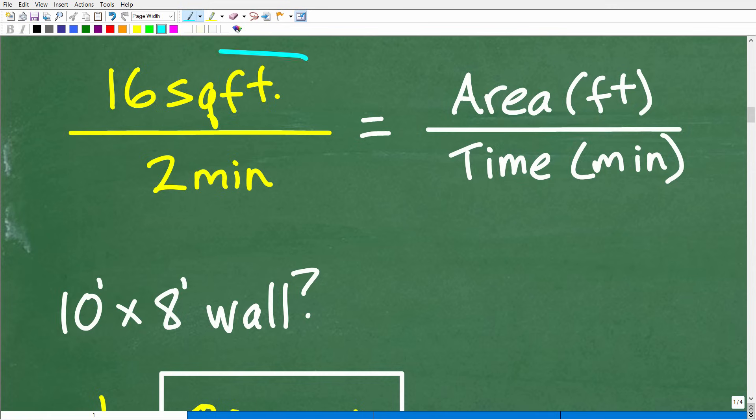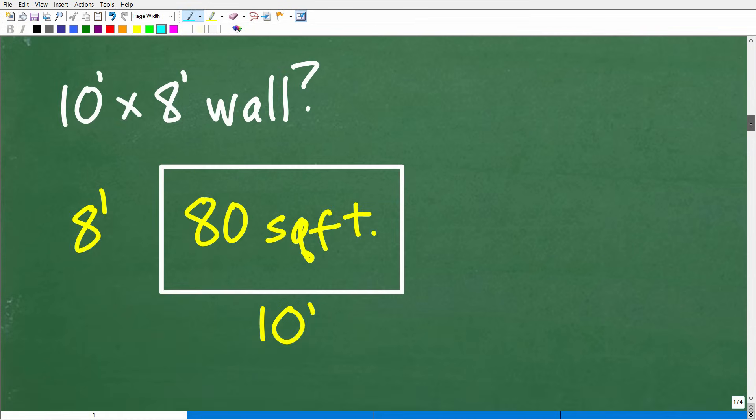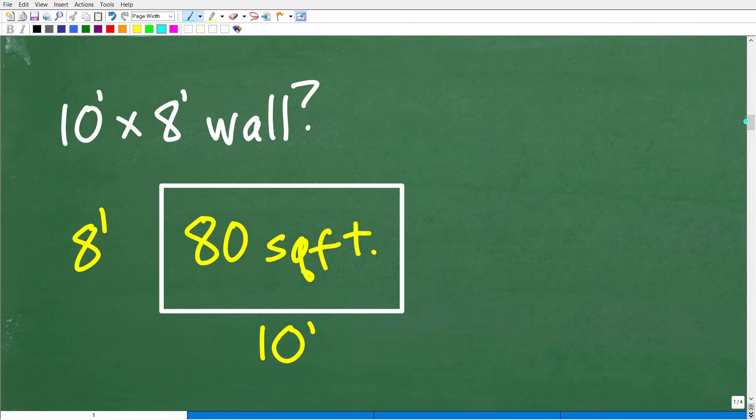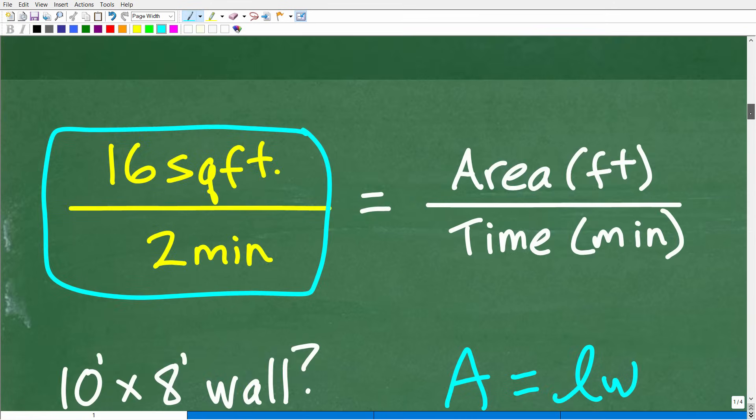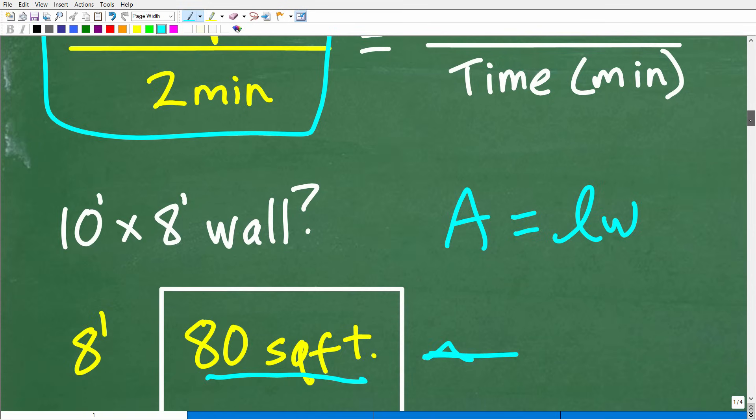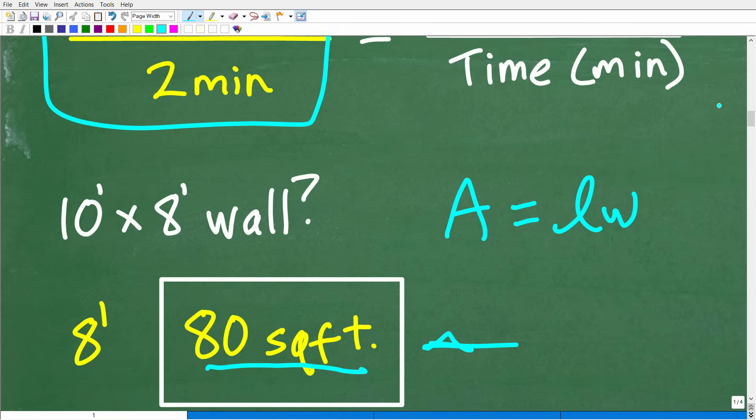But it serves us no purpose to learn about rates and ratios unless we can solve rates and ratio problems by setting up a proportion. All right, so this is our painting speed. We want to define this as a rate, 16 square feet per two minutes. Now, let's take a look at the other part of this problem, and that is we want to paint this wall, and it's a 10 foot by 8 foot wall. So we need to get our area for this. So the area is going to be length times width, so 8 times 10 is 80 or 80 square feet. So we want to cover 80 square feet, and we know our coverage speed, 16 square feet per two minutes. Now we can set up a proportion and solve this problem.